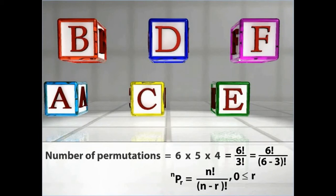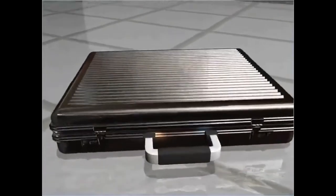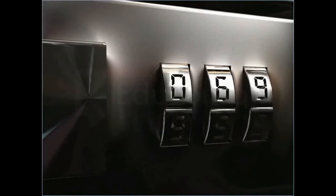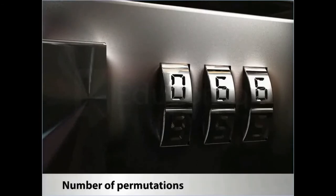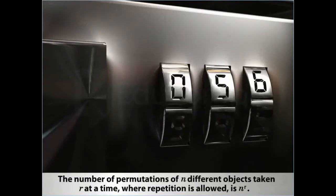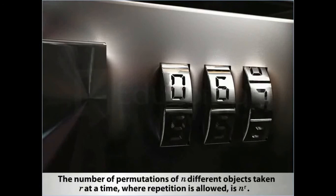Note that the value of r is always greater than or equal to zero and less than or equal to n, and repetition of objects does not occur. Now look at this number lock on the briefcase. You can select any number from zero to nine on each of the dials. If repetition of numbers is allowed, then each dial can choose a number in ten ways. So, permutations of three numbers are 10 × 10 × 10, that is, ten cubed. This helps you deduce that the number of permutations of n different objects taken r at a time, where repetition is allowed, is n raised to the power r.